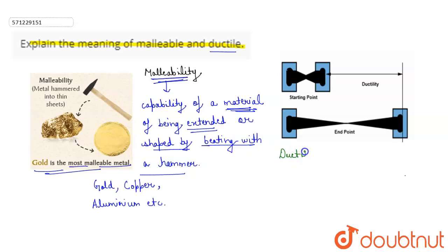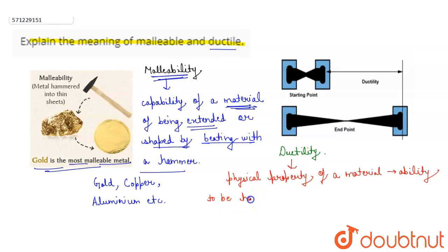or we can say ductility. So basically, ductility is the physical property of a material associated with the ability to be hammered thin or stretched into wire without breaking.